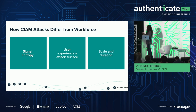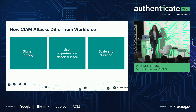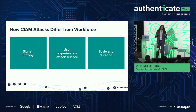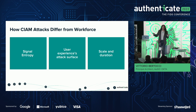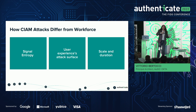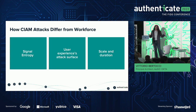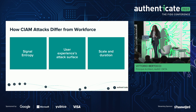The other difference is scale and duration. When you attack workforce, you try to be as sneaky as possible — spearphishing, compromising privileged accounts. Whereas in CIAM, the attacks can be extremely loud. Attackers just throw everything they have at you. There is relatively little you can do, and there is no advantage for them in being sneaky, apart from specific sub-scenarios.